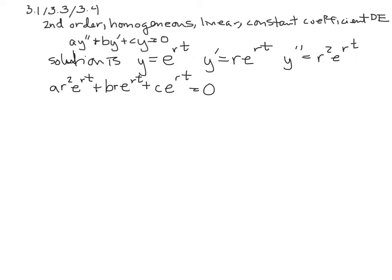I could factor out the e to the rt's out of this whole thing, but e to the rt is never going to equal 0, so you could think of it as dividing it out, you could think of it as sort of ignoring it, because that can never be 0, exponential never is 0. And so what that leaves us with is ar squared plus br plus c equals 0, and this gives us a way now to solve for r.